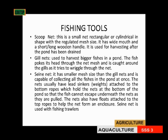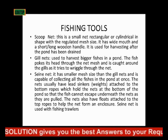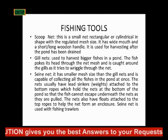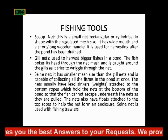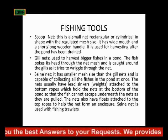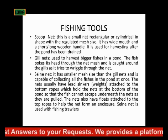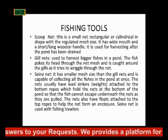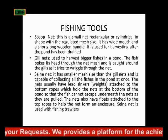The next kind of net is the seine net. These have a smaller mesh size than the gill net and are capable of collecting all the fishes in the pond at once, because the size is small so both small and big fishes cannot escape.